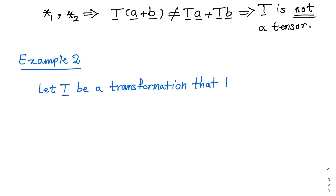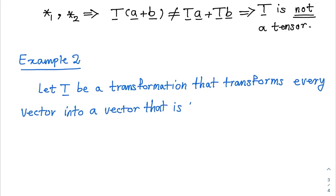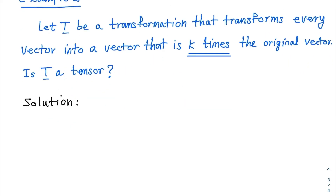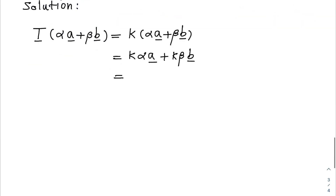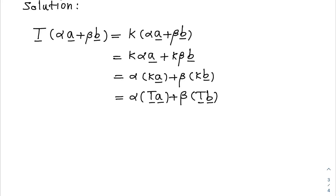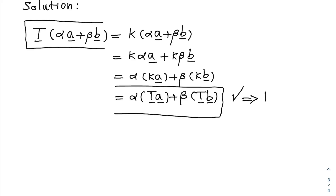Let T be a transformation that transforms every vector into a vector that is K times the original vector. Is T a tensor? We use the single condition of linearity. Transformation of alpha A plus beta B equals K times (alpha A plus beta B), which equals K alpha A plus K beta B. Since scalars K, alpha, and beta are interchangeable, this equals alpha times KA plus beta times KB. Since KA and KB are the transformations of vectors A and B, this equals alpha times T of A plus beta times T of B. Therefore, this transformation is linear and T is a tensor.